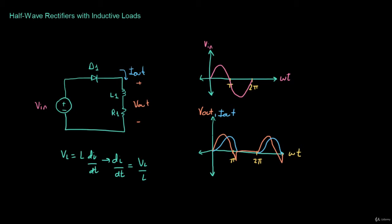The peak of the output voltage is going to be just like in the previous example. If we say that V_in has a peak magnitude of V, then the peak of the output voltage is also going to be V. However, the peak of the output current is going to change compared to the previous example. Remember that last time we said V equals IR, therefore I equals V over R. A more true statement here is V equals I·Z, where Z is the impedance of the circuit.